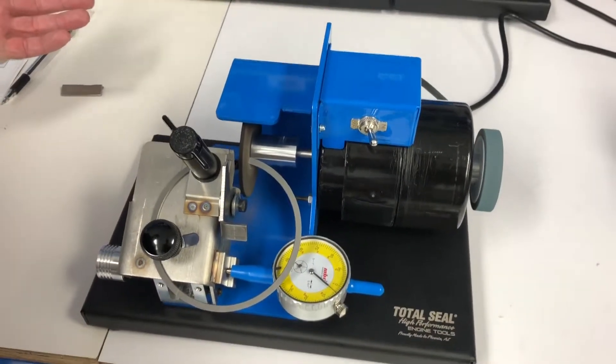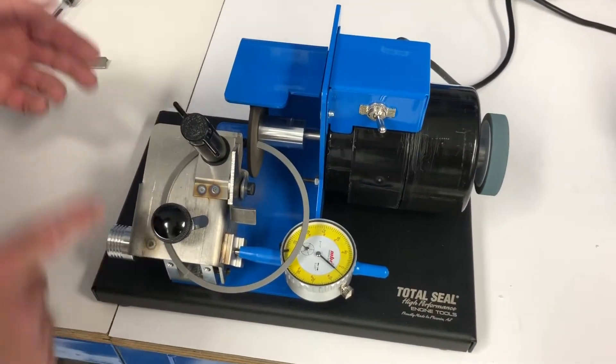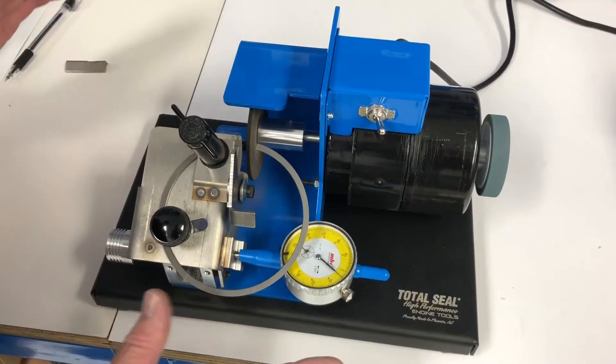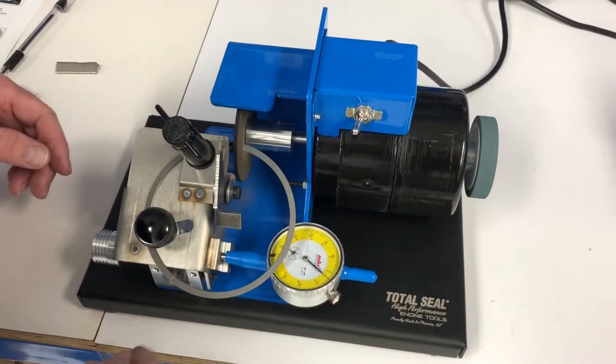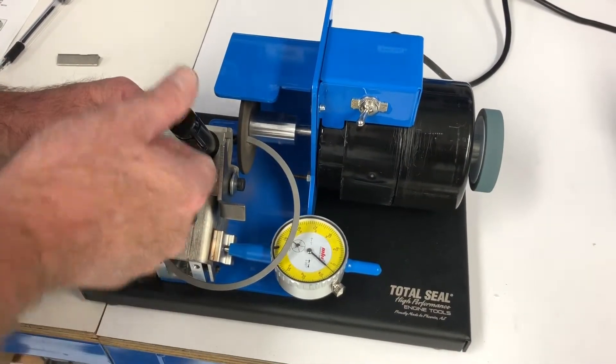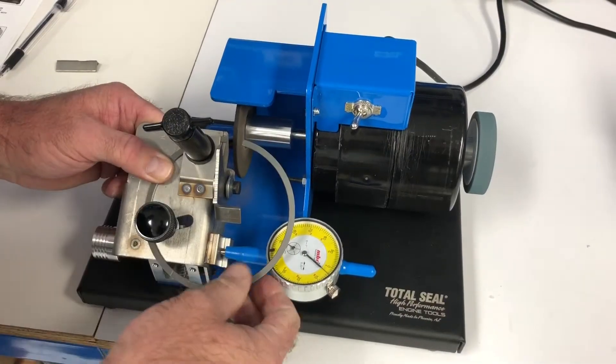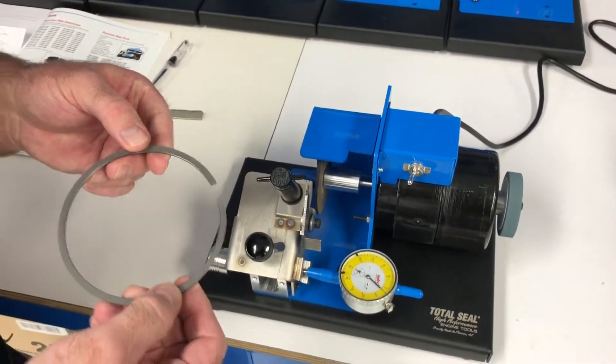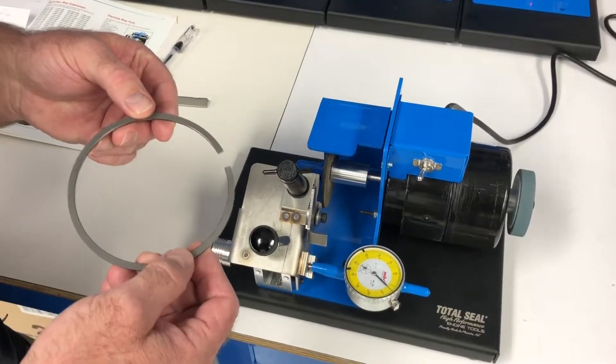It's really simple, really easy to use, very repeatable. Once you get this set you don't change it. Now at this point I'm going to stop it for now to get rid of the noise. You take the ring off, put it back in your bore, check the end gap. And that's it.